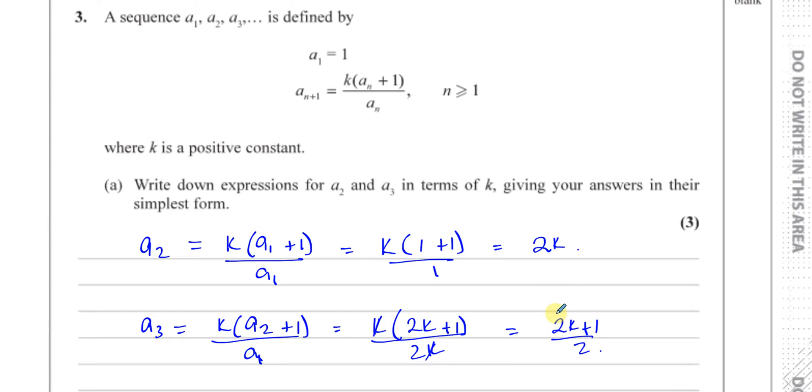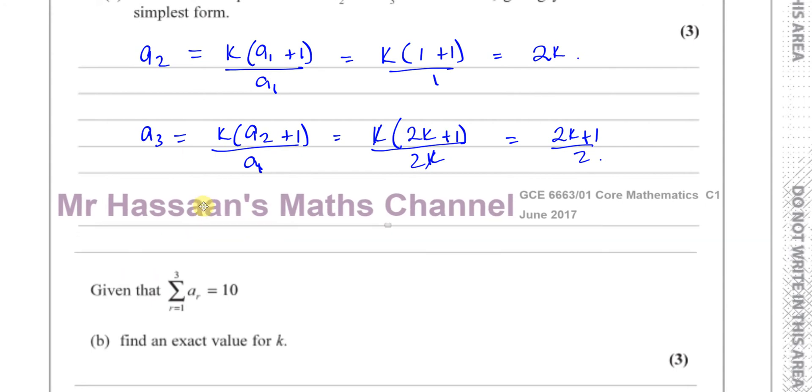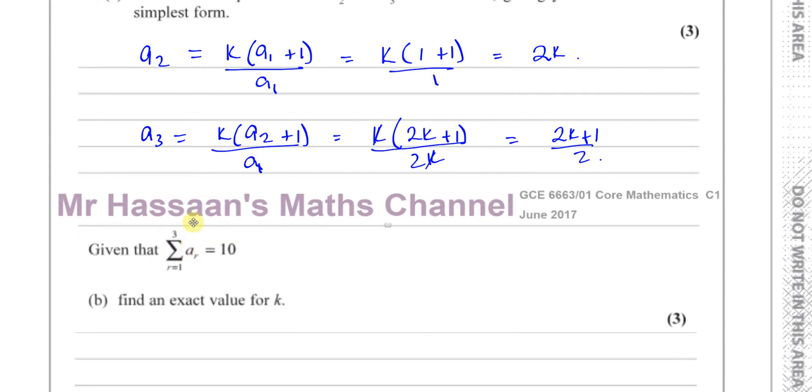So that's a1, a2 and a3. So we found a2 and a3, now we've got to go on to part b. Part b says given that, this means given that the sum of the terms from r equals 1 to r equals 3.